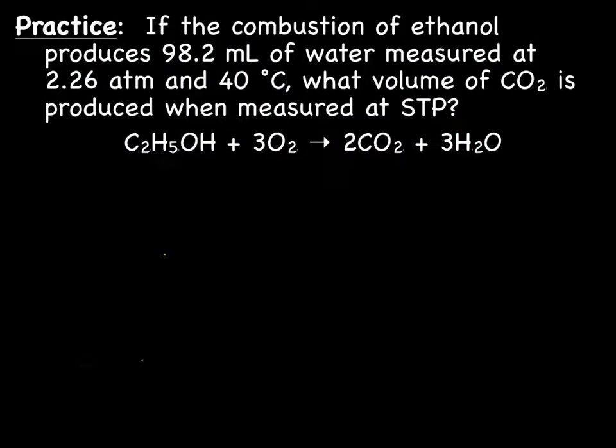We're going to just do a couple practice problems. If you remember, stoichiometry is a method used to determine the amount of reactant or product needed. Because we're in gas laws unit, our reactants and or products may be gases, and often you want the volume of a gas, not the mass of a gas. Let's read through this problem: if the combustion of ethanol produces 98.2 milliliters of water measured at 2.26 atm and 40 degrees Celsius, what volume of CO2 is produced when measured at STP? We're going from water to carbon dioxide, which would be a stoichiometry problem.